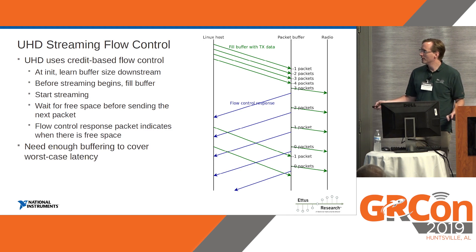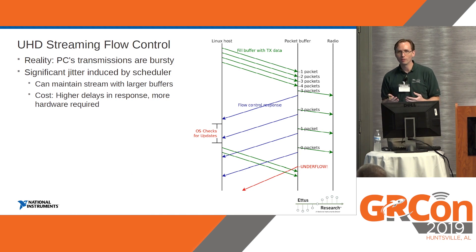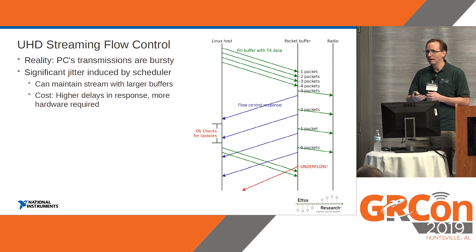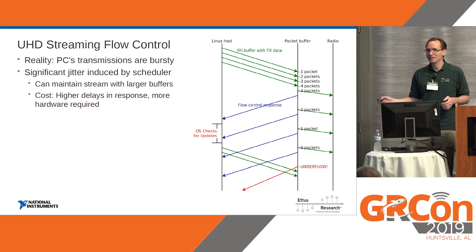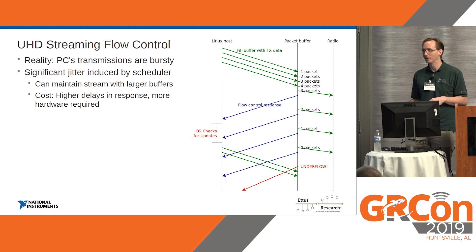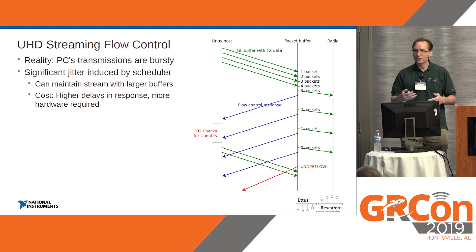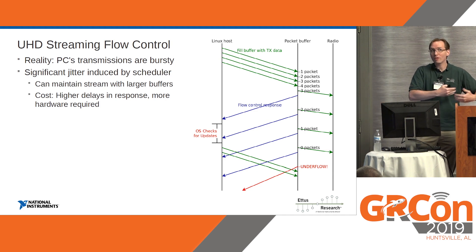With this you can see we need enough buffering to cover whatever is the worst-case latency. Unfortunately, transmissions are kind of bursty and we don't have complete control over the whole machine. You can get a lot of jitter induced by the scheduler and other things happening at the time. For example, what if we got a flow control response and the OS needed to check for updates, and we just can't do our thing? We couldn't process that response in time, couldn't send a packet until it was too late, got our underflow, and had some junk sent out over the radio. One way to help would be to just use more buffers and fill it up more, but there's a cost — higher delays and more hardware required.